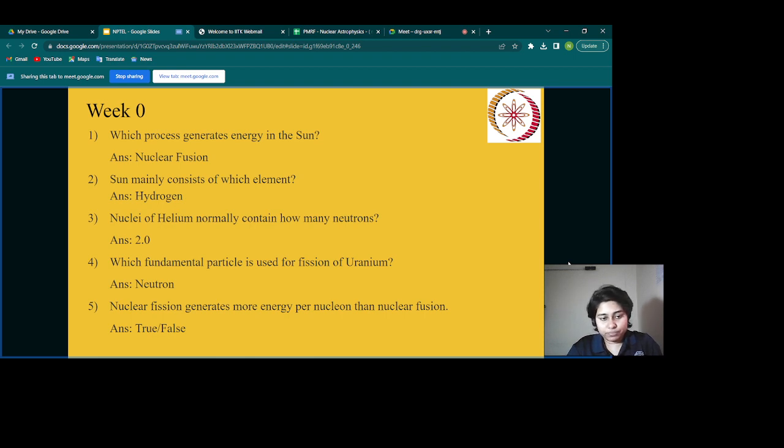Fifth question: nuclear fission generates more energy per nucleon than nuclear fusion. Is this true or false? Let us read the question once again. Nuclear fusion generates more energy per nucleon than nuclear fission. This is false, because we have already seen that nuclear fusion is the process that generates energy in the Sun, so nuclear fission is not generating more energy. These are very basic level questions just to give you a notion that you should remember or revisit these concepts.